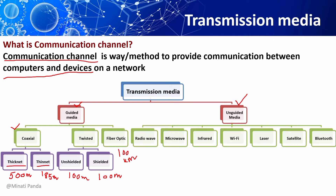The second one is microwaves. There are two types: one is terrestrial microwave and the second one is satellite microwave. In terrestrial microwave, the range will be less, and in satellite microwave, the range will be more. The best example of satellite microwave is the mobile network.